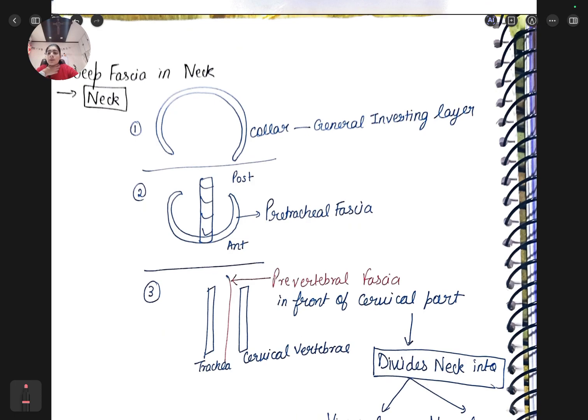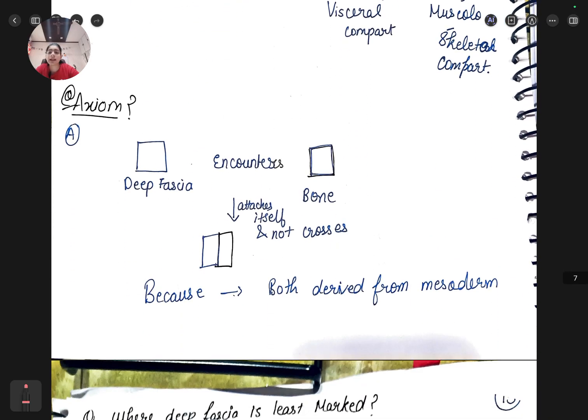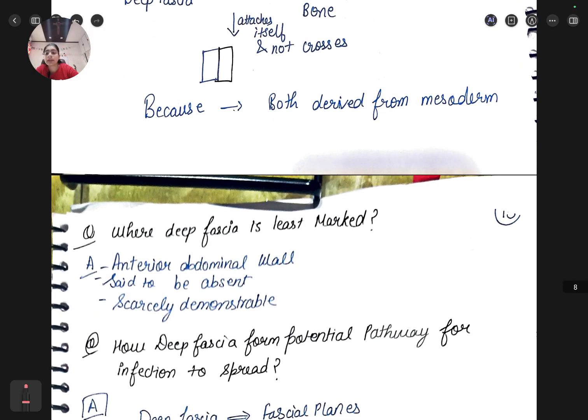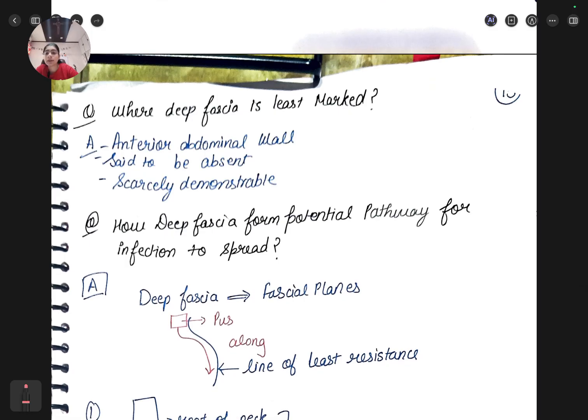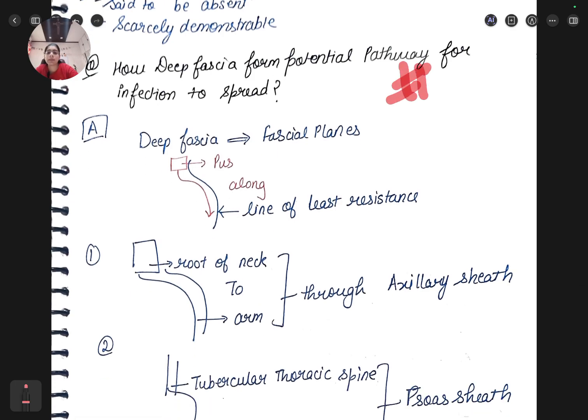The deep fascia in neck - it is a collar type of fascia, pretracheal fascia and prevertebral fascia. You will learn in detail about these three fascia in head and neck. What is axiom? When deep fascia encounters a bone it attaches itself, it will not pierce the bone and grow across because both are derived from mesoderm. Where deep fascia is least marked - in anterior abdominal wall which is said to be absent.